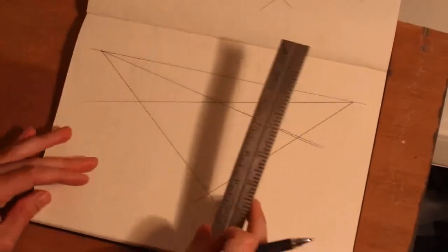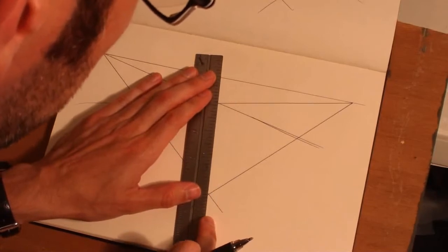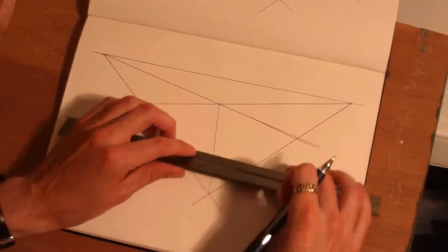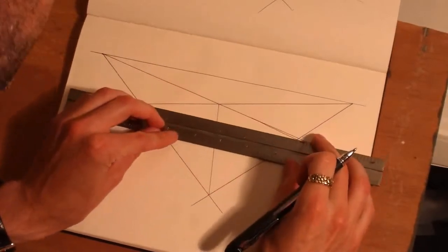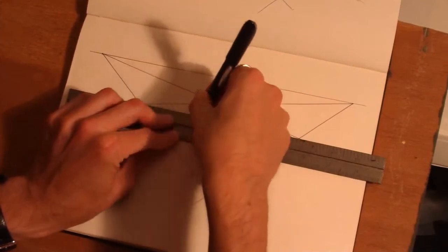We're going to use our normal subdivision method by drawing an X corner to corner. And we're going to subdivide and subdivide and subdivide until we get our 4x4 grid, except in two-point perspective.